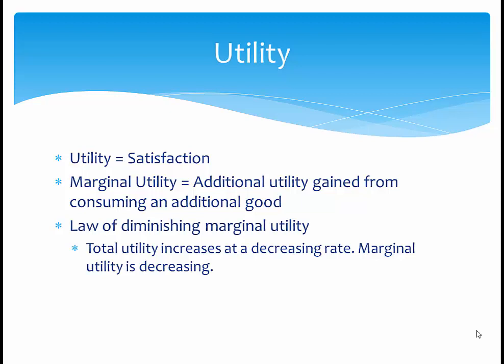The law of diminishing marginal utility states that the marginal utility is decreasing, but the total utility is increasing at a decreasing rate. Think about pizza. The first slice is really good, so the marginal utility is really high. The second slice is good, but not quite as good as the first one, so the marginal utility is decreasing — but it's still positive, and you still feel better after eating a second slice. The third slice is just like eh, and eventually it becomes so bad that you feel worse after a slice. That's the diminishing marginal utility.